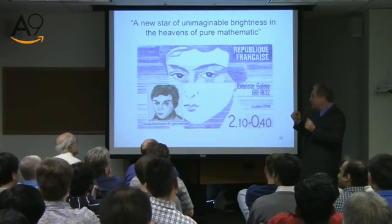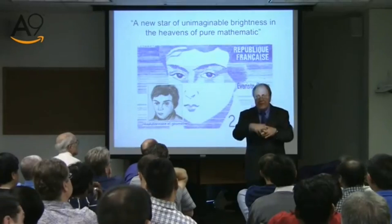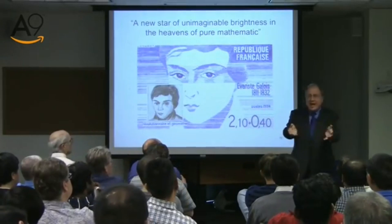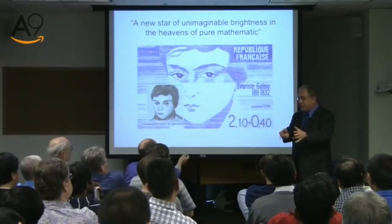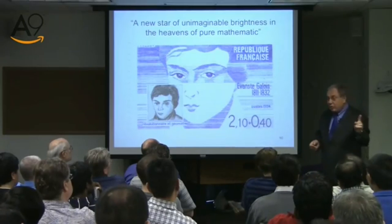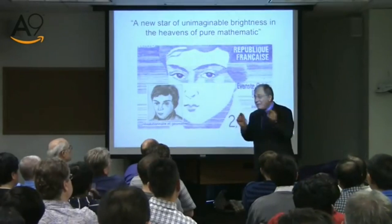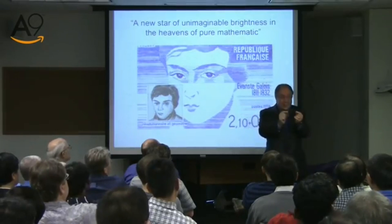Mozart wrote music. But it's a wonderful romantic story. He disappears — nobody knows about him for another 13 years, when Liouville, another French mathematician, discovers this letter among other manuscripts and presents it to the world as one of the greatest mathematical works. This is probably the night of May 29, 1832 — it might have been the greatest night in the history of mathematics. In terms of density of what he did, there is nothing quite like it.